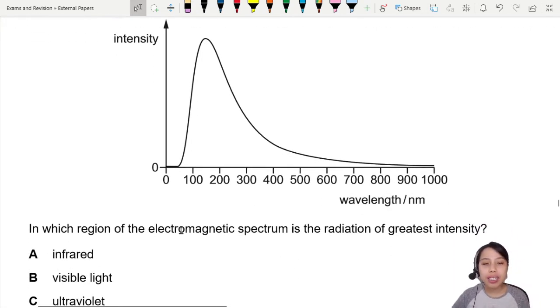In which region is the electromagnetic spectrum of the radiation most intense? So, greatest intensity. It kind of looks like greatest intensity is somewhere here. So what is this region? What are we in?